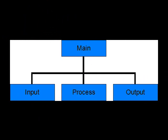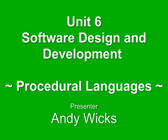A procedural program starts with a procedure called Main usually, and that then calls other procedures in turn. So you might have an Input procedure to handle all the inputs for the program, a Process procedure that does all the work, and an Output procedure that then displays the results. Each of these in turn could be broken down into separate areas, so that you have a whole range of procedures. One program can contain hundreds of procedures.